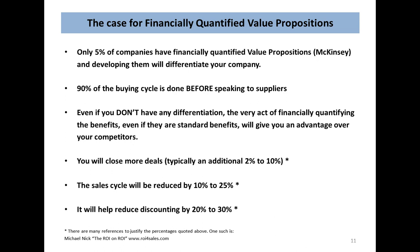This sets out the case for financially quantified value propositions. Only 5% of companies, according to McKinsey, have got them — so if you develop one, it will certainly differentiate your company. Even if you don't have any differentiation, the very act of financially quantifying the benefits will give you an advantage over competitors. And the results are significant: you'll close more deals — typically an additional 2% to 10%; the sales cycle will be reduced by 10% to 25%; and it will help reduce discounting by 20% to 30%.